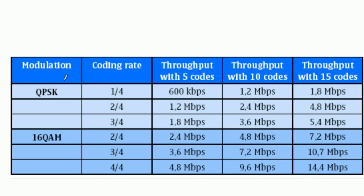Using combinations of different modulation schemes, coding rates, and CDMA codes, we can achieve different data rates. For example, with QPSK at 2 bits per symbol, a coding rate of 1/4, and 5 codes assigned, we get 600 kbps. With 15 codes under the same conditions, we get 1.8 Mbps. In ideal channel conditions with 16-QAM, a coding rate of 1, and 15 codes, we can achieve 14.4 Mbps — the maximum theoretical downlink data rate in HSDPA.